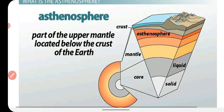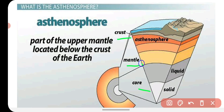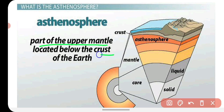Mantle ka uppermost layer jo hota hai, jiske baad crust present hota hai, use hum asthenosphere bolte hain. Ye part of the upper mantle hota hai jo just crust ke niche present hota hai. Asthenosphere ki khas baat ye hoti hai ki yahaan pe jo rocks hoti hain, they are about to melt — they are very soft and weak. Jiski wajah se jo uske upar crust hai, woh iske upar float karta rehta hai. It floats over the asthenosphere. Isi wajah se hamara crust asthenosphere pe fixed nahi hai, balki bahut hi slow, woh uske upar float kar raha hai.